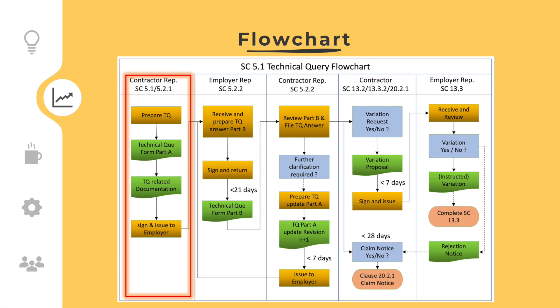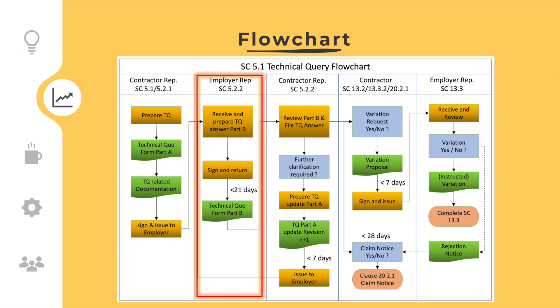In the first step, the contractor shall prepare and issue technical query Part A, including the related documentation. The employer representative shall review the technical query and obtain the answer from the relevant discipline engineer. The answer shall be stated on Part B and sent to the contractor within the time limits.